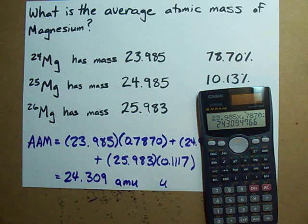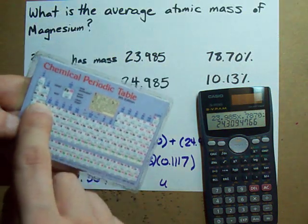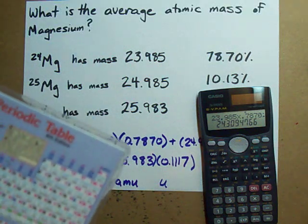What you'll notice is that if you get out a periodic table, oh look, the molar mass of magnesium is 24.30 something.